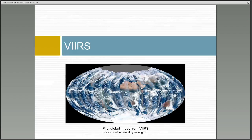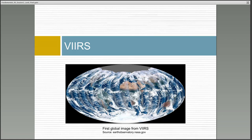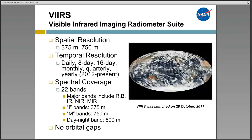Next I will talk about the Visible Infrared Imaging Radiometer Suite, or VIIRS. Like MODIS, VIIRS is a multidisciplinary sensor providing data for ocean information, land, aerosol, and cloud research and operational uses. VIIRS was launched on board Suomi NPP on October 28, 2011. The spatial resolution is 375 to 750 meters depending on the product, with similar temporal resolution to MODIS — data are collected daily with 8-day, 16-day, monthly, quarterly, and yearly composites.